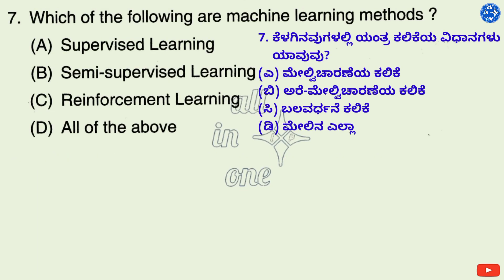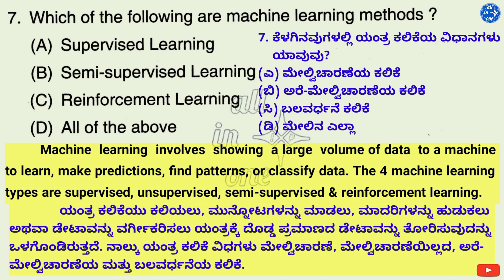Question 7. Which of the following are machine learning methods? Options: A. Supervised learning, B. Semi-supervised learning, C. Reinforcement learning, D. All of the above. Machine learning involves showing a large volume of data to a machine to learn, make predictions, find patterns, or classify data. The four machine learning types are supervised, unsupervised, semi-supervised learning, and reinforcement learning. Hence the right answer is D: All of the above.